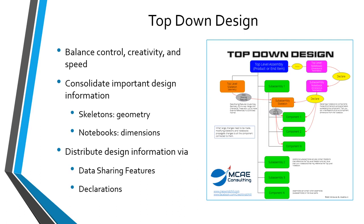Skeletons will contain any geometry that controls multiple different components in your product. For example, in aerospace this might be your OML or outer mold line; in consumer electronics, this would be your industrial design. Different major sub-assemblies have their own skeletons leveraging information from the top-level skeleton, with skeletons continuing down the product structure as necessary. Notebooks will contain any important dimensions or parameters that affect multiple different components. Information from skeletons and notebooks is shared using data sharing features for geometry and declarations for dimensions and parameters into the individual parts.